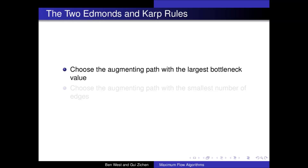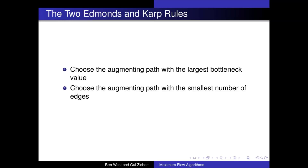The Edmonds-Karp algorithm specifies two rules for how we select the next augmenting path to use. Firstly, we choose the augmenting path with the largest bottleneck value, meaning we choose the path of maximum capacity. Secondly, we must always choose the augmenting path so that it has the smallest number of edges as possible.